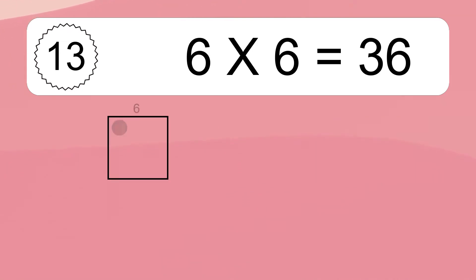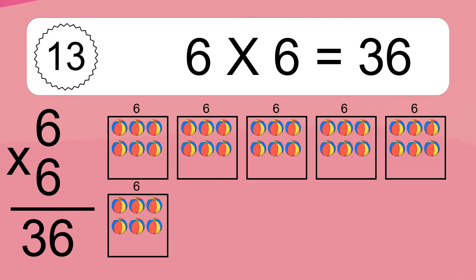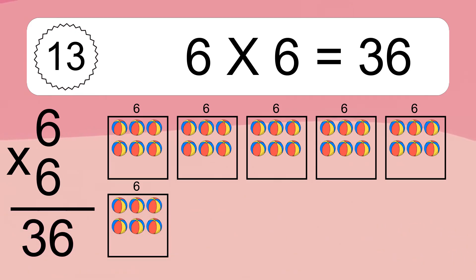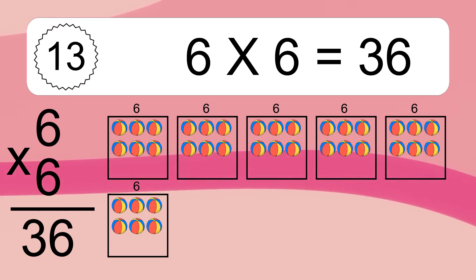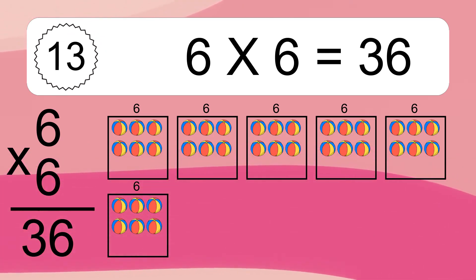6 times 6 equals what? 6 times 6 equals 36. We have 6 boxes, and each box has 6 colorful balls inside. If you count all the balls in all the boxes together, you will have 6 times 6 balls. This equals 36 balls.